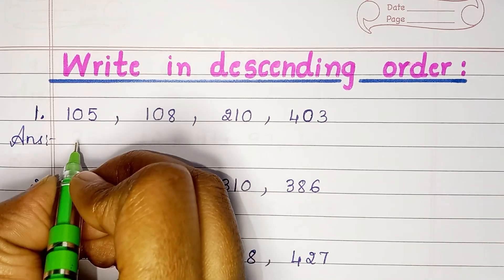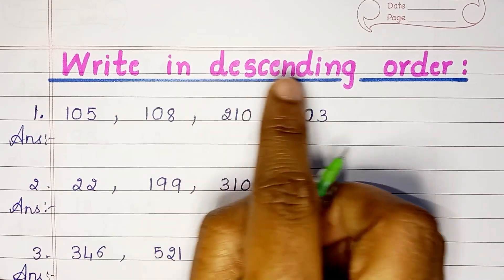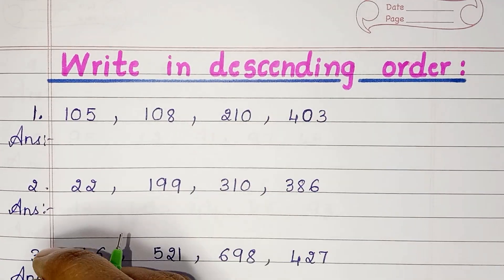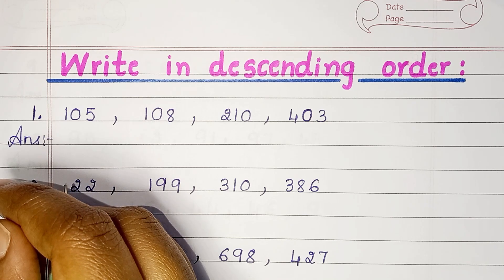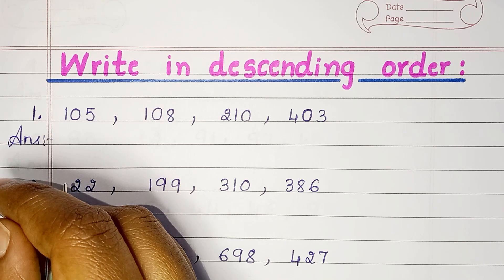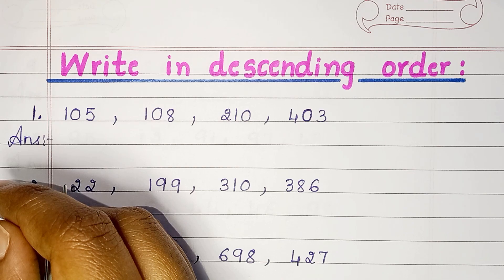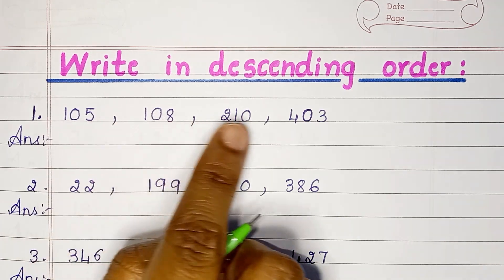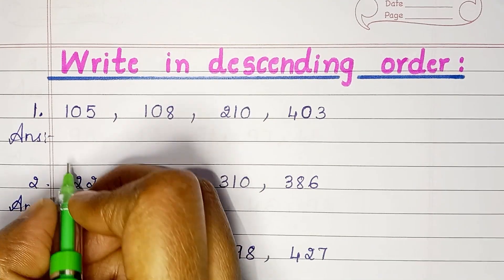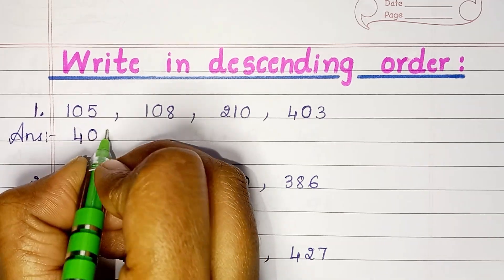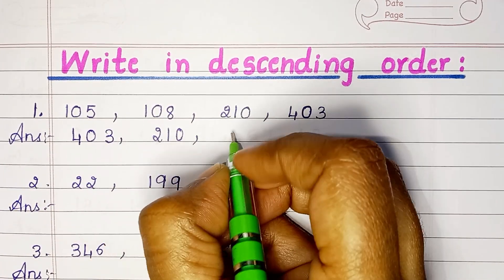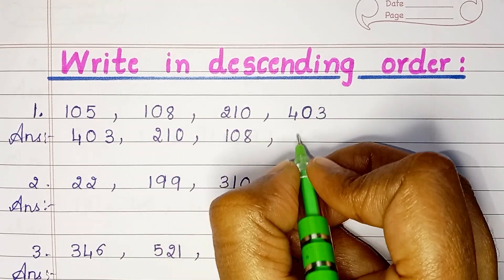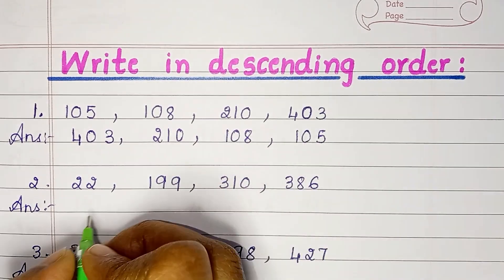Write in descending order. Descending order means arranging from largest to smallest value. 105, 108, 210, 403. Let us arrange in descending order: 403, 210, 108, 105.